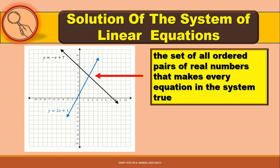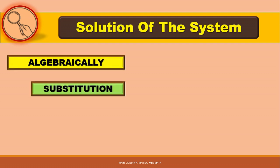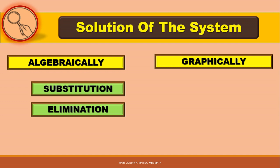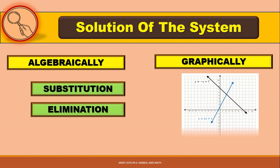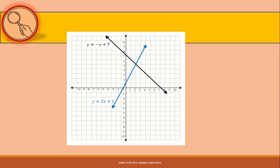A solution of such equations is an ordered pair of numbers that satisfies both equations. In our illustration, the solution is (2, 5). The solution set is the set of ordered pairs of real numbers that make the equations in the system true. To find the solutions graphically, graph both equations in a Cartesian plane, then find the point of intersection if it exists. The solution corresponds to the coordinates of the points of intersection.